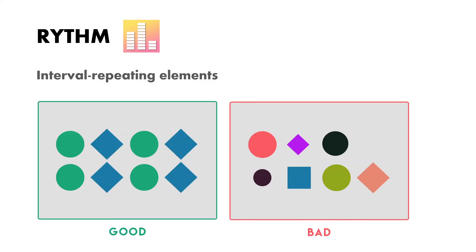Next is rhythm. Rhythm is the interval repeating of elements. You might confuse rhythm with repetition — repetition uses the exact same element repeatedly, but in rhythm the shape and size can be slightly changed or manipulated, as long as it remains recognizable. For example, using slightly smaller versions of an element still creates rhythm but is not repetition, because repetition requires the exact same element used multiple times.